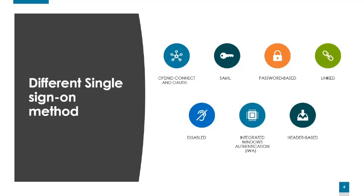So what are the single sign-on methods available? We have OpenID Connect and OAuth, SAML, password-based, linked, disabled, integrated Windows authentication, and header-based. These are the available SSO methods. We will discuss them one by one, their pros and cons, why you should use one specific method, and how you can choose which one to use.